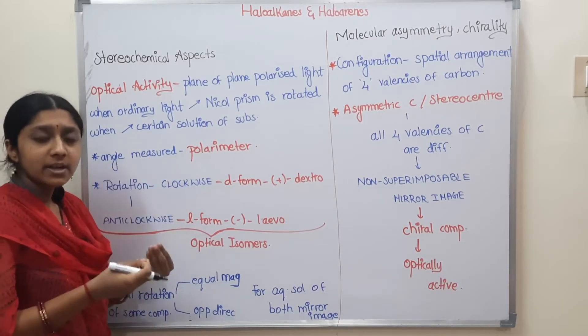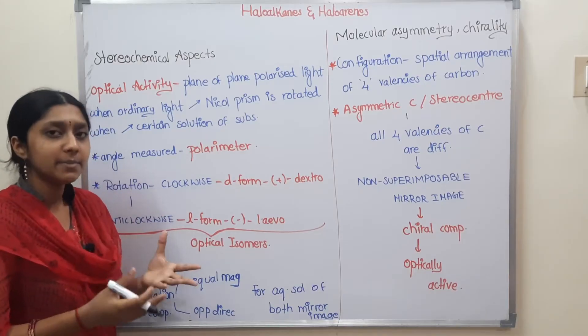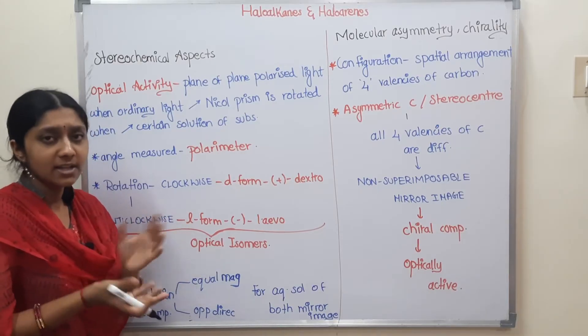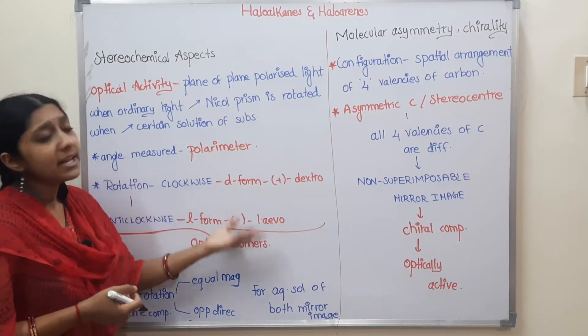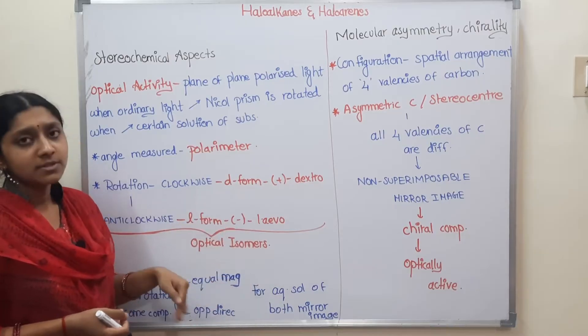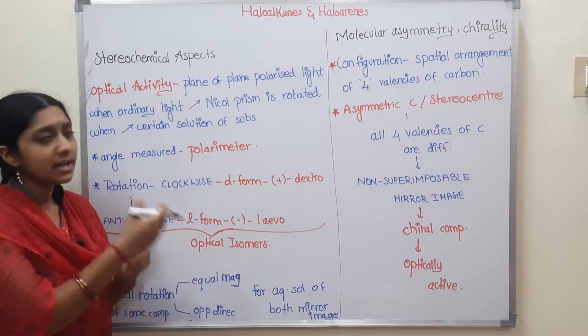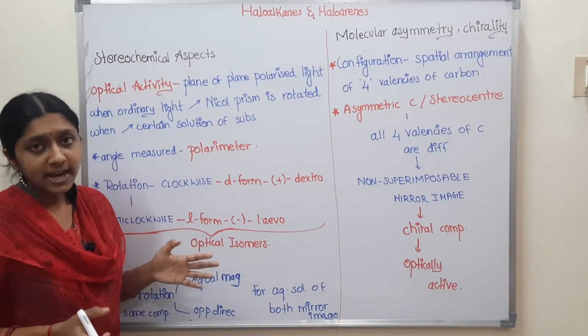We are going to pass light through a halide compound. How do we react? How do isomers form? So we are going to see the mechanism.